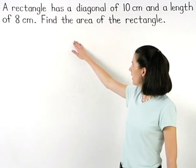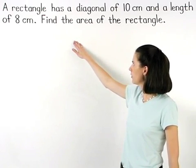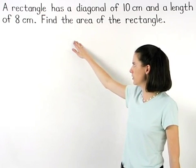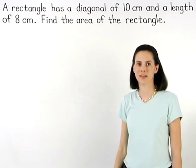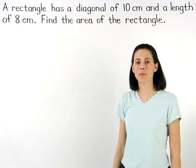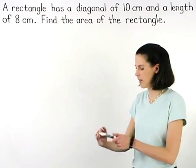A rectangle has a diagonal of 10 centimeters and a length of 8 centimeters. Find the area of the rectangle. Let's start this problem by drawing a picture of the rectangle.